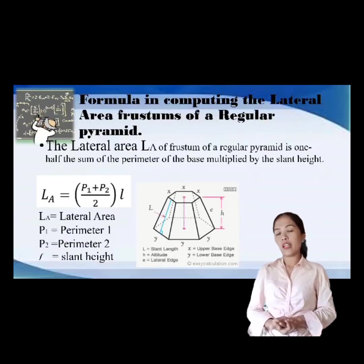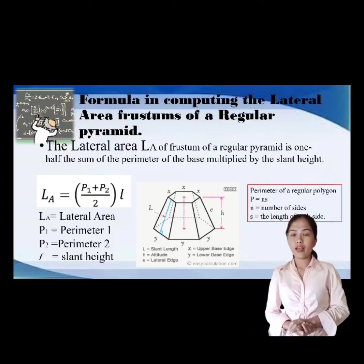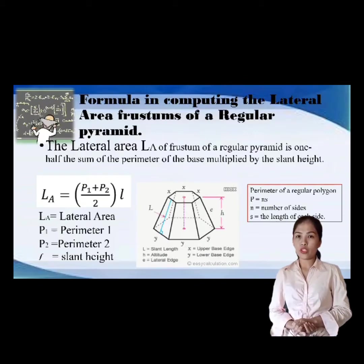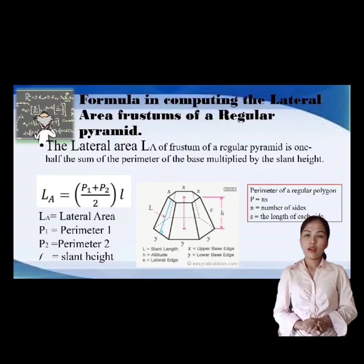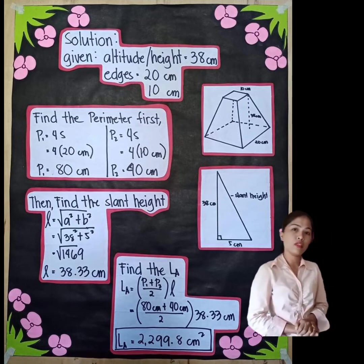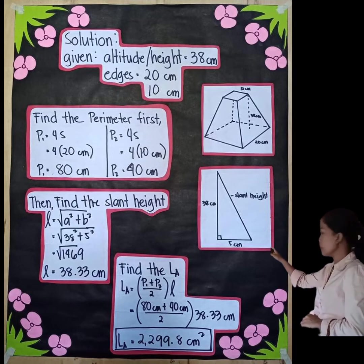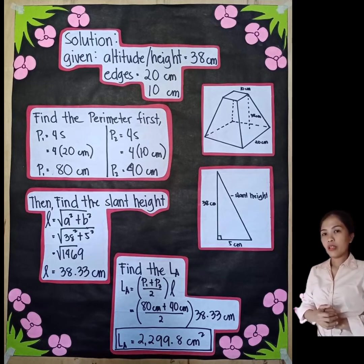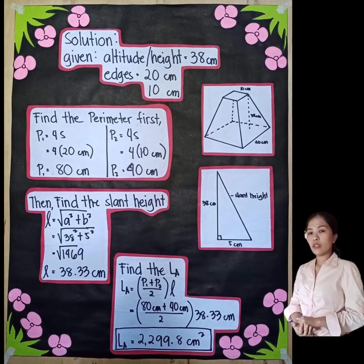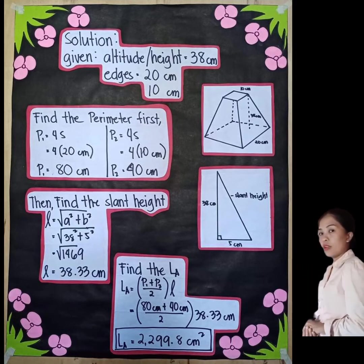To find the lateral area of the frustum we use the formula LA = (P1 + P2) / 2 × l, where P1 and P2 are the perimeters of the bases and l is the slant height. The given values are: altitude = 38 cm, and base edges of 20 cm and 10 cm. To find the perimeters, since the bases are squares, we use P = 4s.